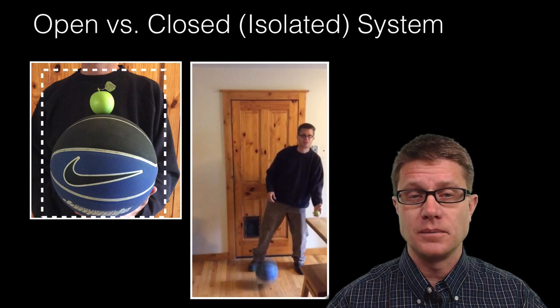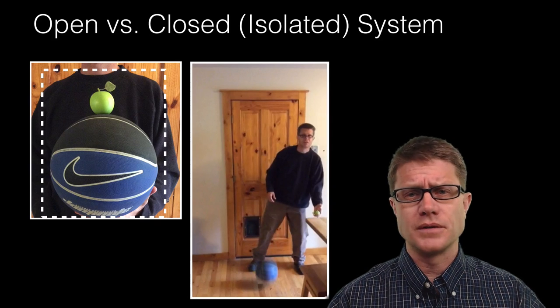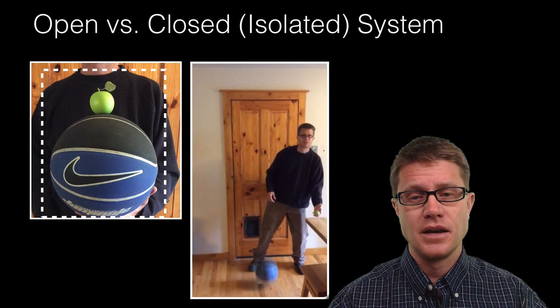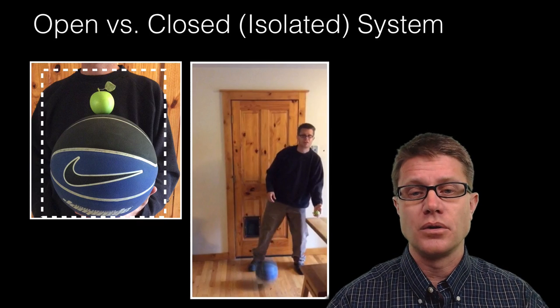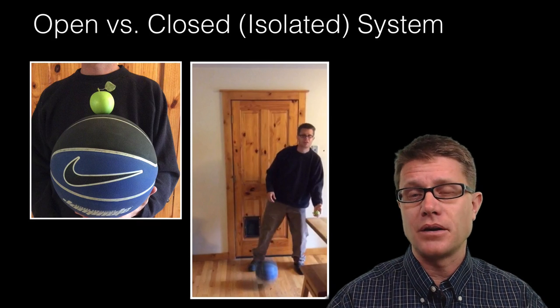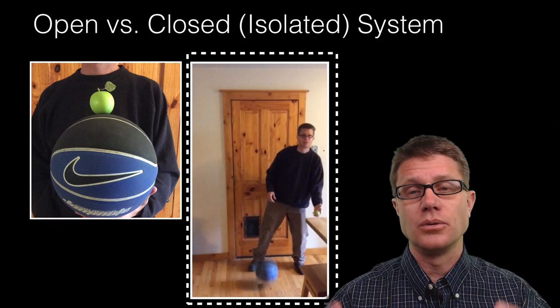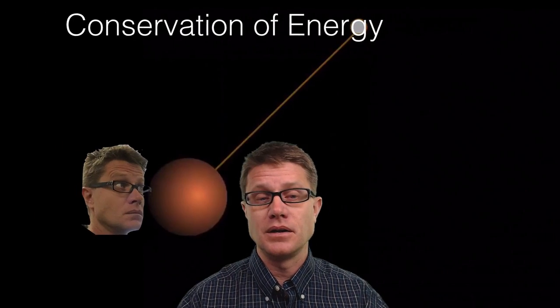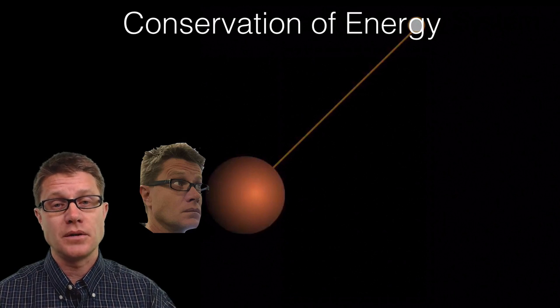So if we were to make this our system, that also would be an open system because I'm not taking into account the floor, or if you watch this, the apple actually bounces off of the roof. And so this would be a better representation of this closed system. And so once we've defined what that closed system is, then we have conservation of energy, charge and momentum.